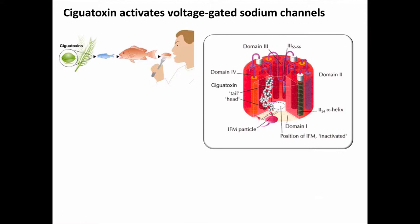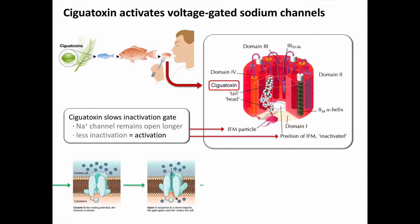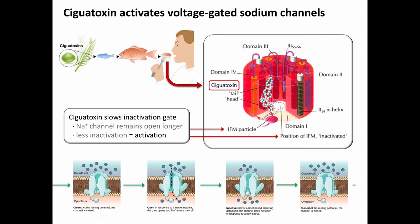Ciguatoxin's mechanism of action is by activating fast voltage-gated sodium channels, which is virtually the opposite of how tetrodotoxin works. Ciguatoxin is ingested from contaminated fish, and it binds to voltage-gated sodium channels. The toxin slows or blocks the inactivation gate of the sodium channel, which means that more sodium channels remain open or activated. The sodium channels have three states they cycle through: closed, open, inactivated, and then closed or resting again. The step that ciguatoxin inhibits is where the open sodium channel gets closed by the inactivation gate.